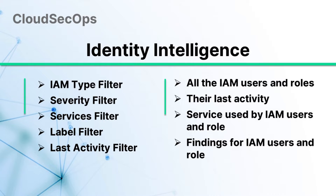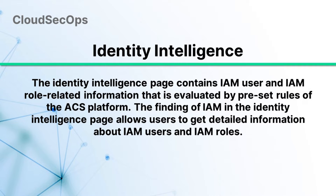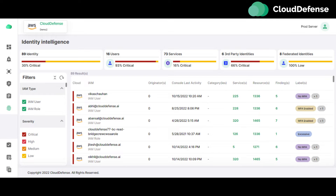Hello everyone. In this video we will show you Identity Intelligence. The Identity Intelligence page contains IAM user and IAM role related information that is evaluated by preset rules of the ACS platform. The top of the Identity Intelligence page gives the user an overview of the number of identities, number of users, number of services, third-party identities, federated identities, etc., of the cloud account, with an evaluation of the severity level of the IAM user and role.